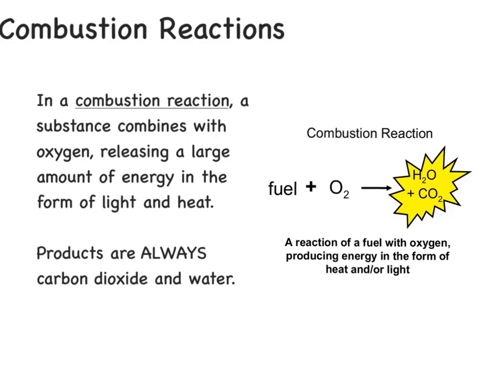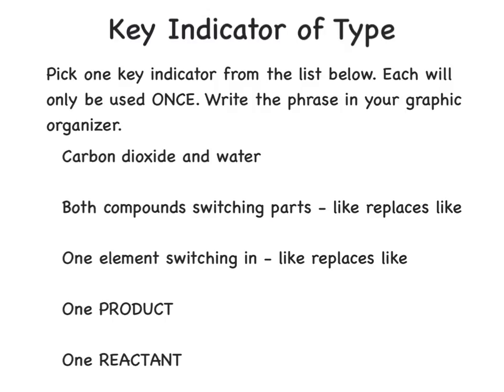Our last type of reaction is a combustion reaction. In a combustion reaction, a substance combines with oxygen and releases a large amount of energy in the form of light and heat. The products are always carbon dioxide and water. The key for a combustion reaction is that carbon dioxide and water are the only products.